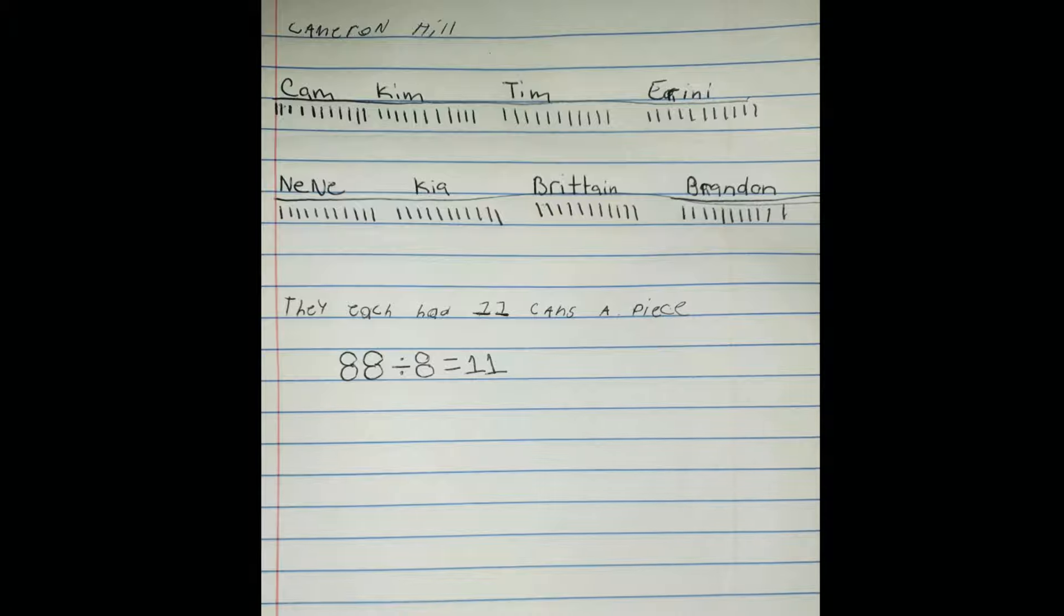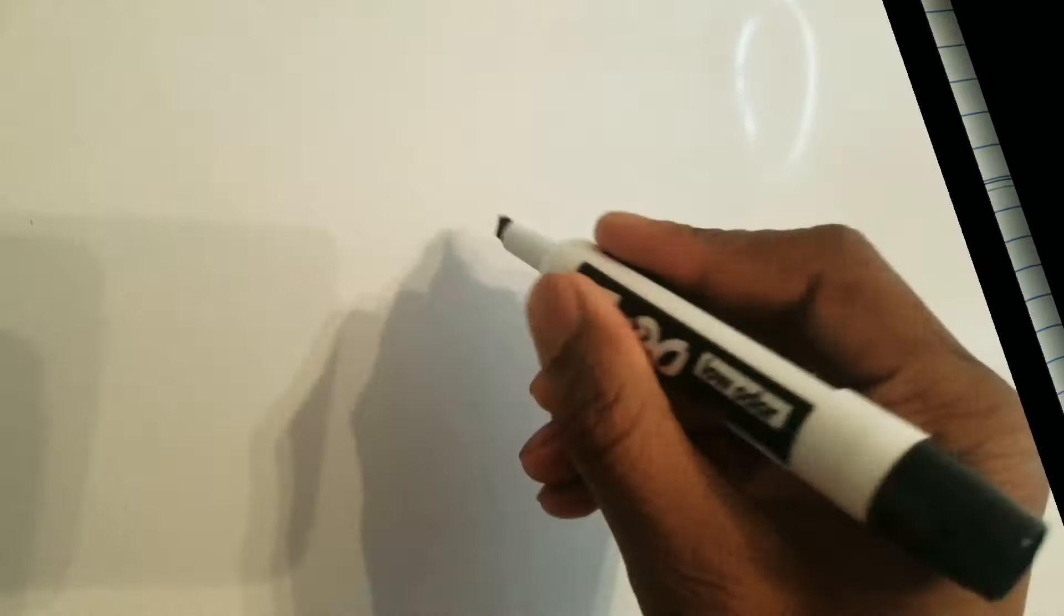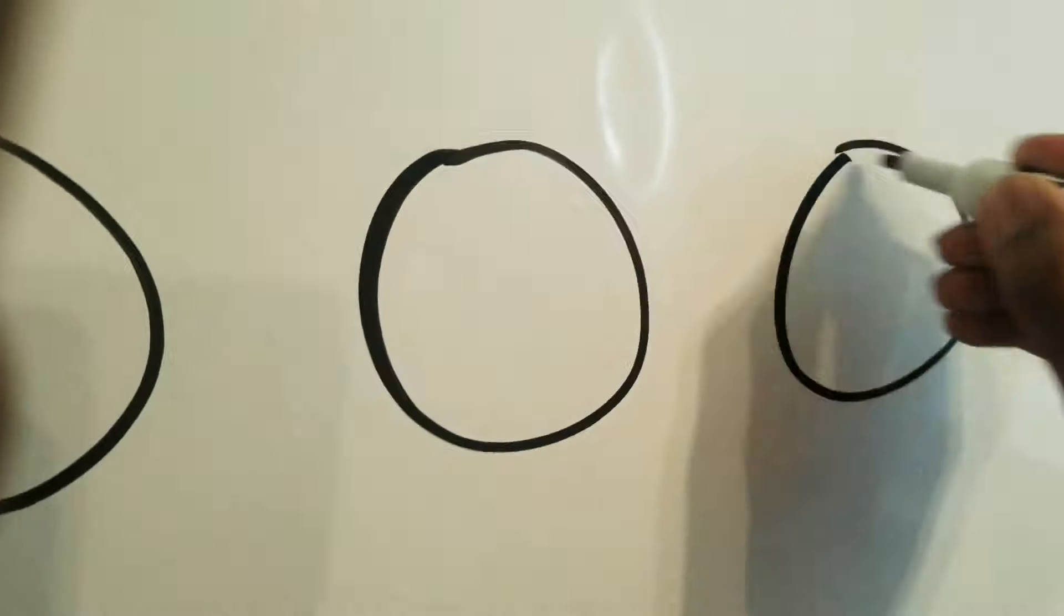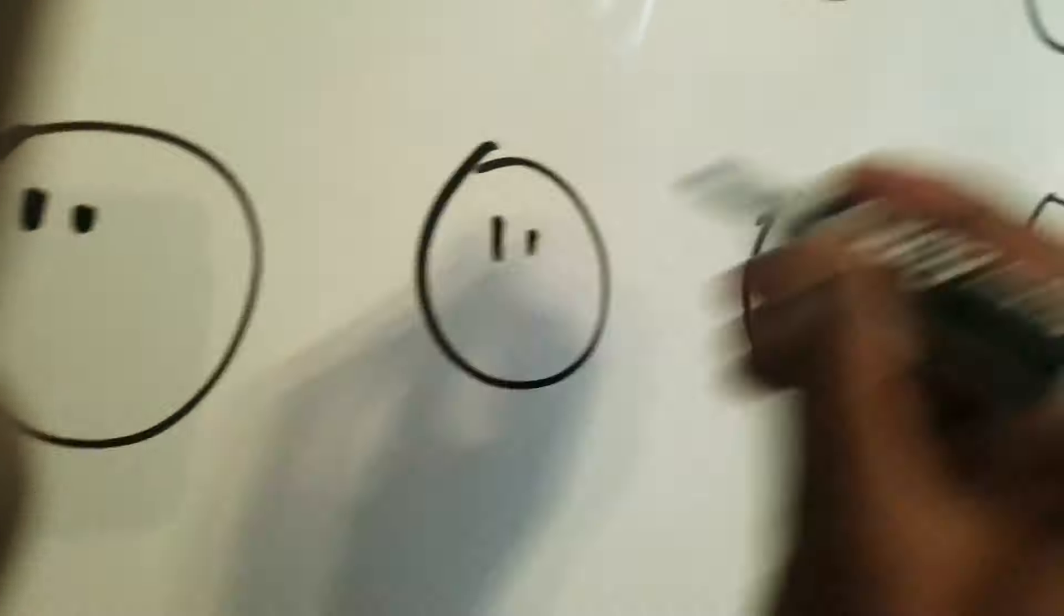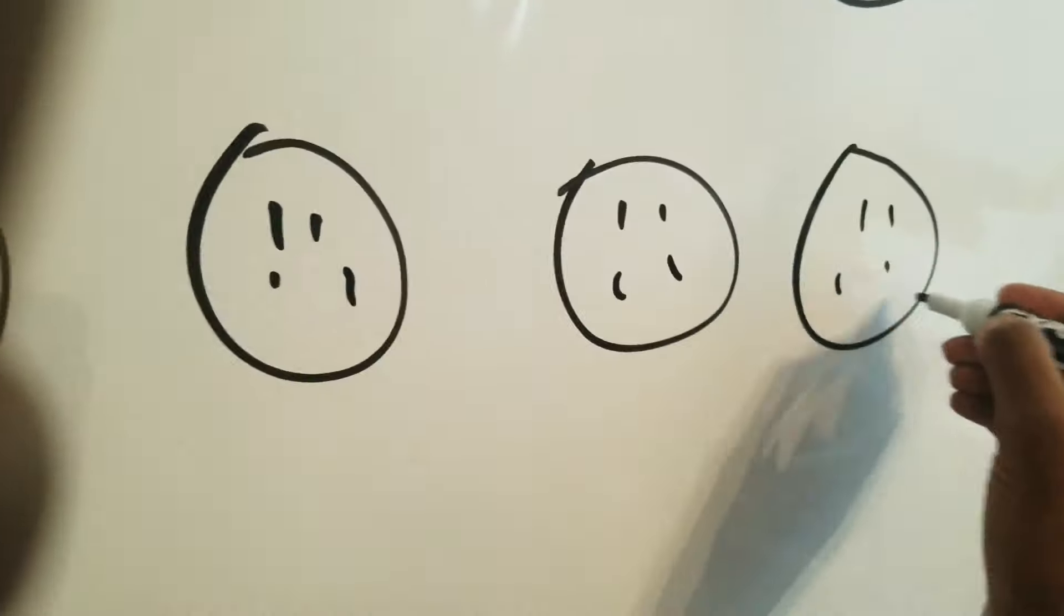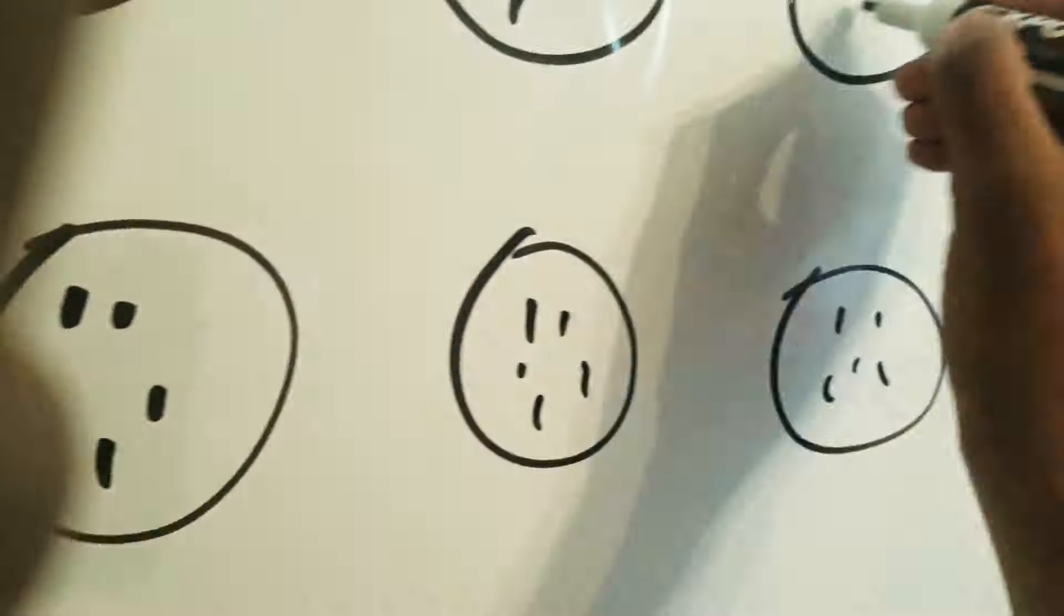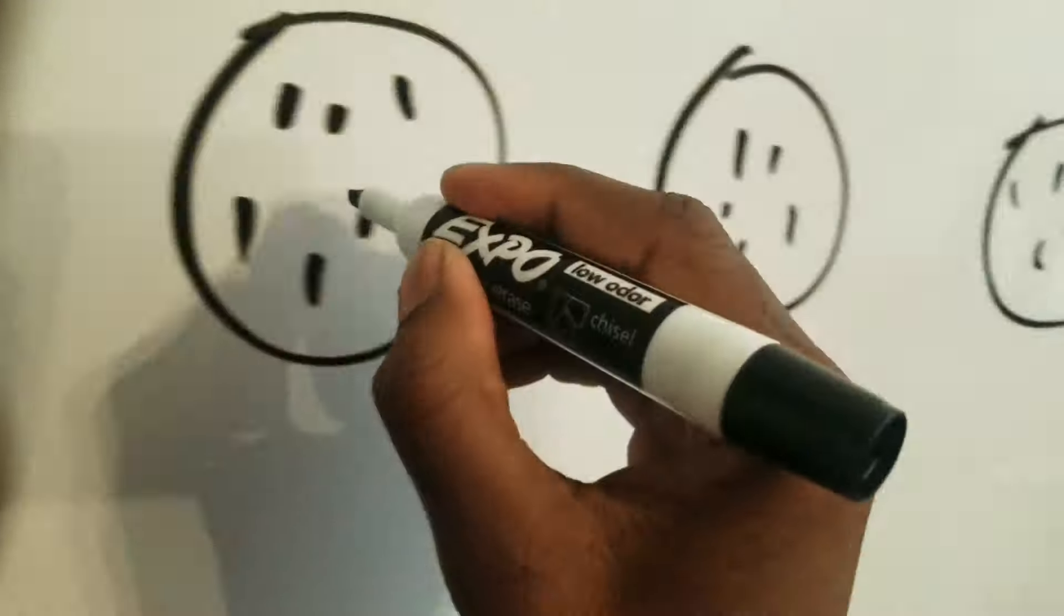Now, guys, I'm going to write this out for you and show you my thinking as well. I decided to draw eight circles and then I put one dot apiece in each circle until I got to 88. That way I can know how many were in each and that would be my answer.